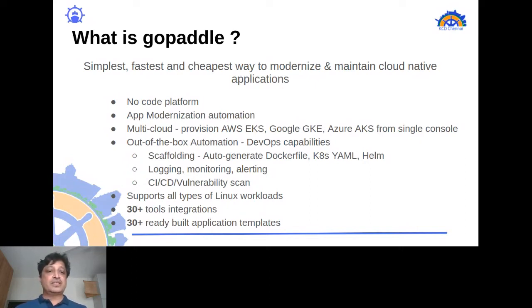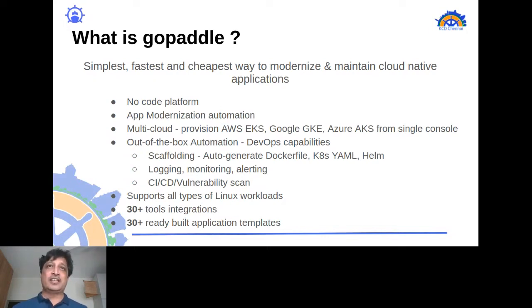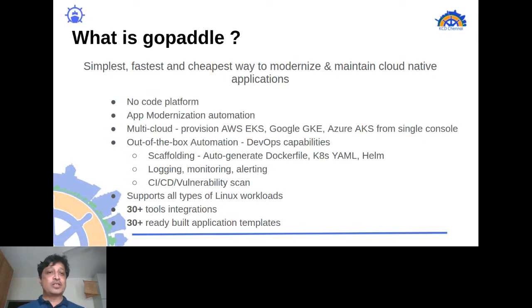GoPaddle has over 30 tool integrations, including Grafana for monitoring and many others. It also provides 30-plus ready-built application templates — for example, a MongoDB template that can readily run on a Kubernetes cluster — so you can integrate them directly into your app.